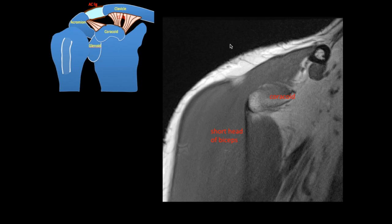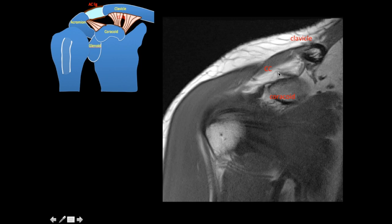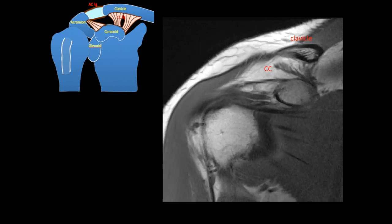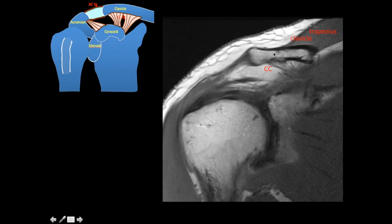On coronal MRI images going from anterior to posterior: the anterior-most image shows the coracoid process with the short head of biceps tendon attaching to it. Going posteriorly you see the clavicle with the trapezius attaching superiorly and the deltoid attaching inferiorly. Then a thin hypointense structure arises from the coracoid — this is the coracoclavicular ligament. Tracing it posteriorly you can see the two components: the medial conoid and the lateral trapezoid, with fat between them, and the ligament attaches to the undersurface of the clavicle.